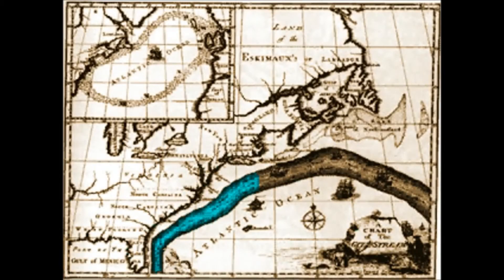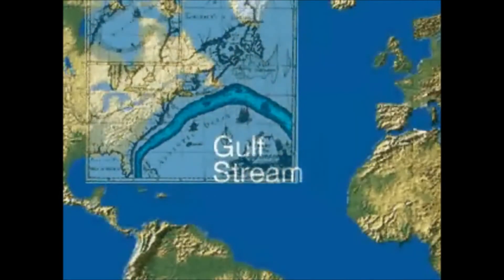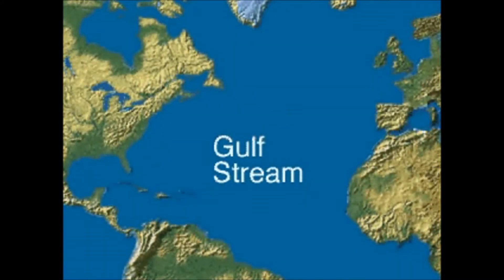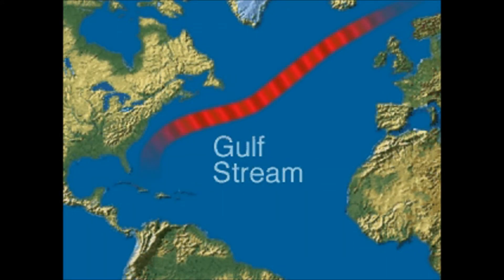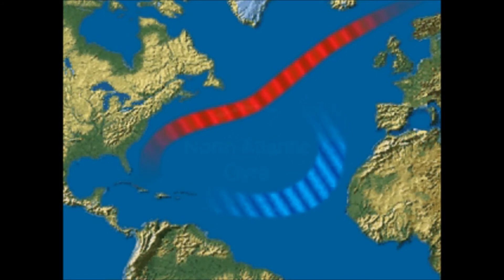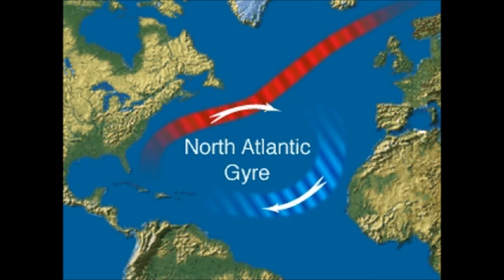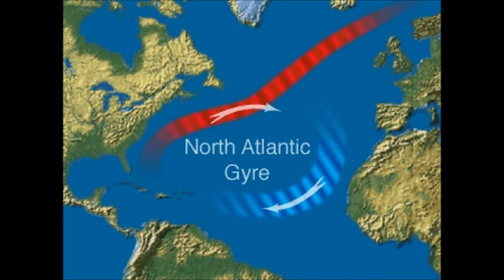First chartered by Benjamin Franklin, the Gulf Stream is a powerful surface current flowing north from the Gulf of Mexico along the eastern coast of North America. It merges with other currents to form a vast clockwise moving system known as the North Atlantic Gyre.